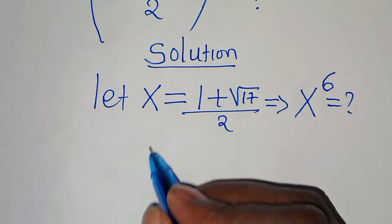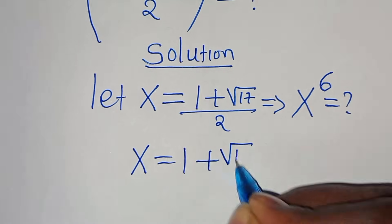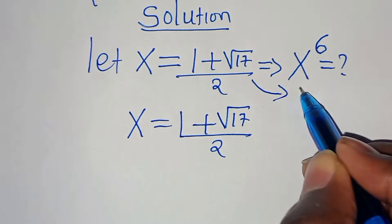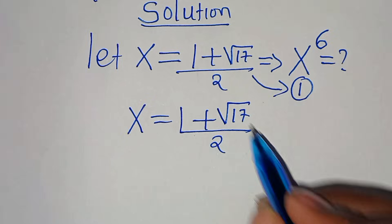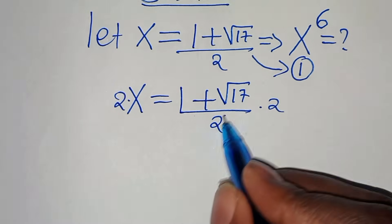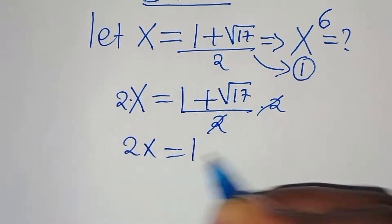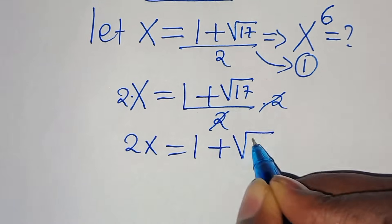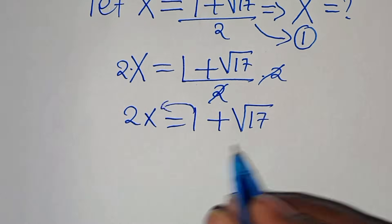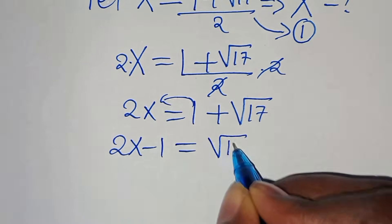We have that x is equal to (1 plus root 17) over 2 — let's call this equation 1. Let's multiply both sides by 2, so that now we have 2x equals 1 plus root 17. Let's take 1 to the left-hand side, so that we have 2x minus 1 equals root 17.